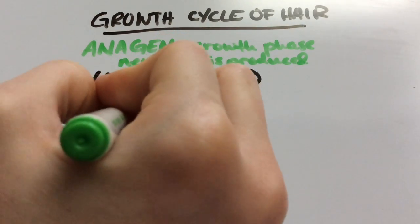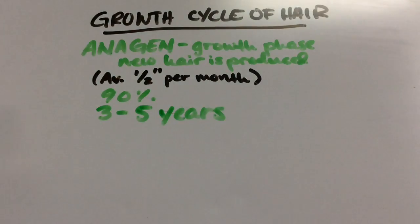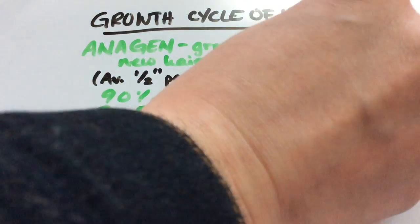That's why some women can only grow their hair to their shoulders, while others can grow it all the way to the floor. It depends on how long your anagen phase is.